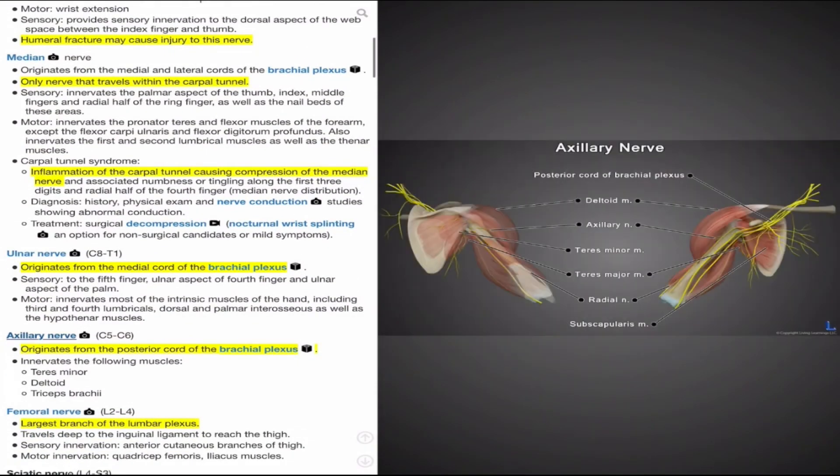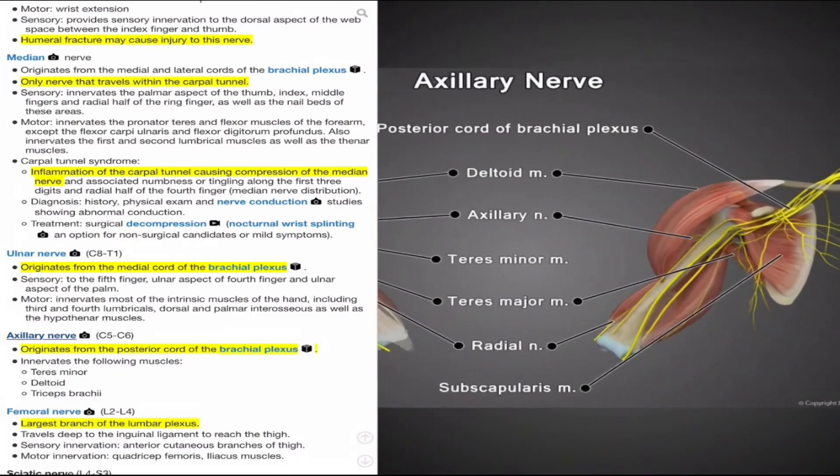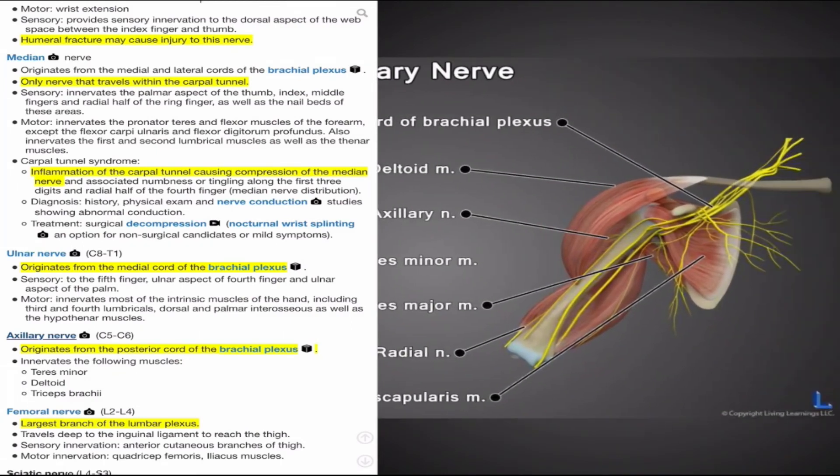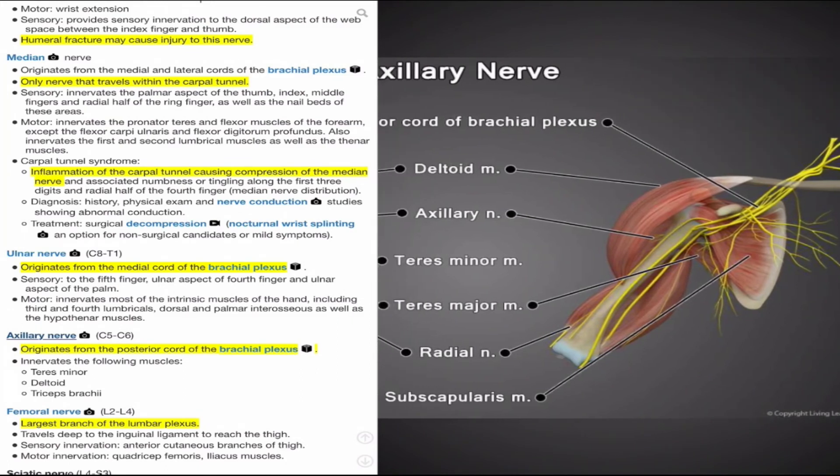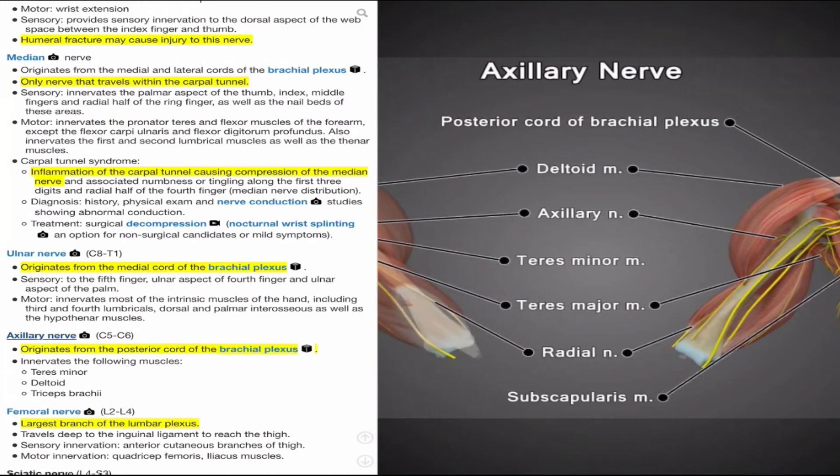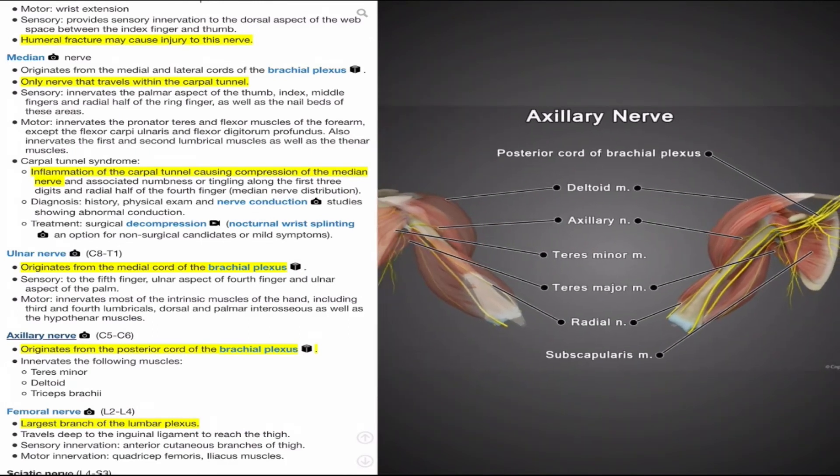The last nerve of the upper extremity we'll discuss is the axillary nerve, which branches from the posterior cord of the brachial plexus and receives contributions from C5 and C6. It's important due to its innervation to the shoulder, specifically the deltoid muscle, teres minor, and triceps brachii. Moving along, we'll highlight two high-yield nervous structures of the lower extremity.